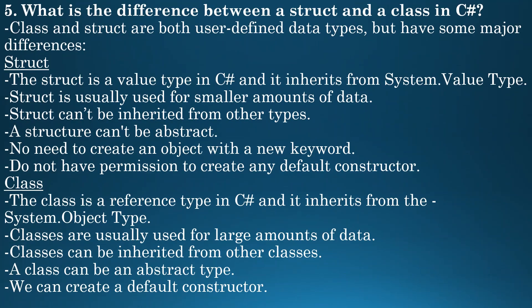Next question: what is the difference between a struct and a class in C-Sharp? Both are user-defined data types but have some major differences. Struct is a value type in C-Sharp and it inherits from system.ValueType. Struct is usually used for smaller amounts of data. Struct cannot be inherited from other types, a structure cannot be abstract, no need to create an object with a new keyword, and you cannot create any default constructor.